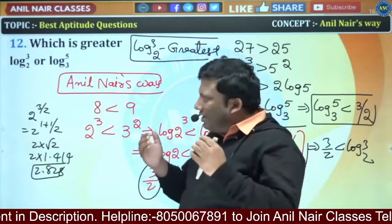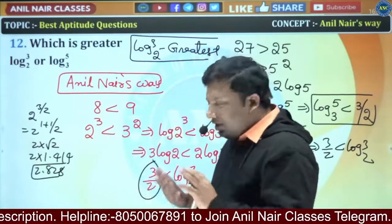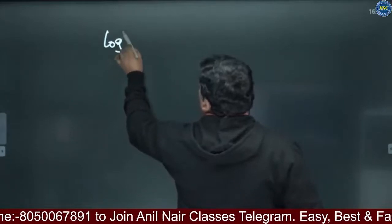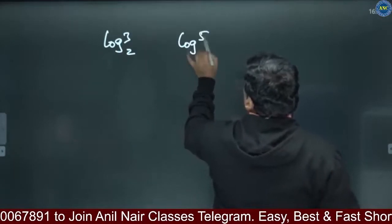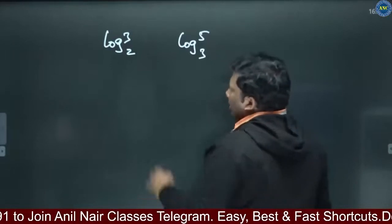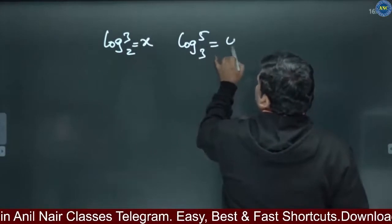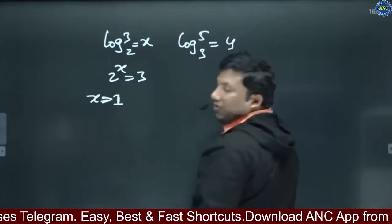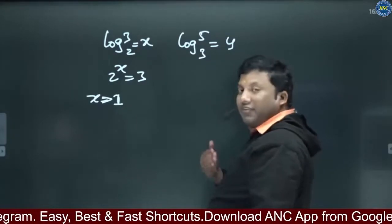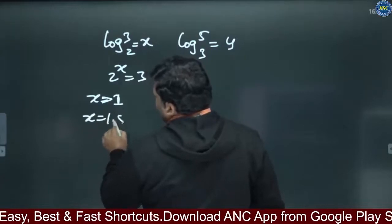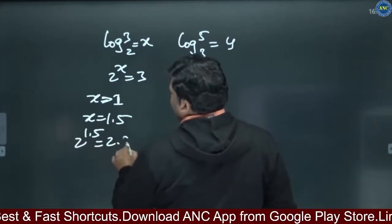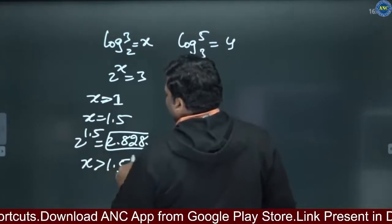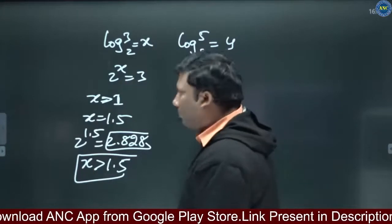Very simply, you can do it — this is one way, but let me condense it. Let log 3 base 2 be equivalent to x, so 2 power x equals 3. Since 2 power 1 equals 2, x is greater than 1. If I take x equal to 1.5, then 2 power 1.5 is 2.828, which is less than 3. That means x should be greater than 1.5.